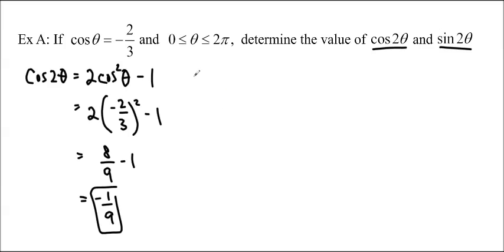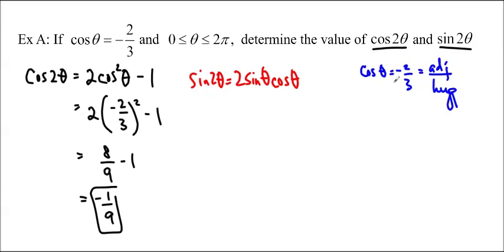To find sine 2 theta, we know that sine 2 theta is equal to 2 sine theta cos theta. We do know what cos theta is, but we don't know what sine theta is, so we're going to have to figure it out. We know that cos theta equals negative 2 over 3, so this is the adjacent over the hypotenuse. So the opposite is equal to the square root of 3 squared minus 2 squared, which is root 5.